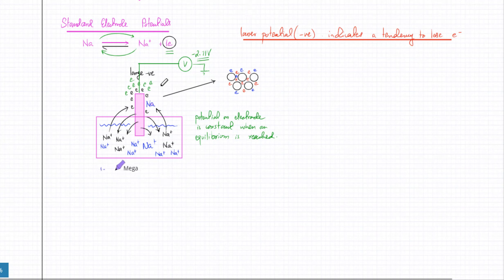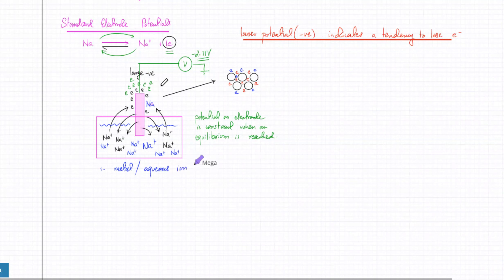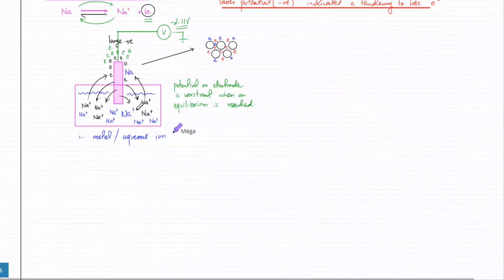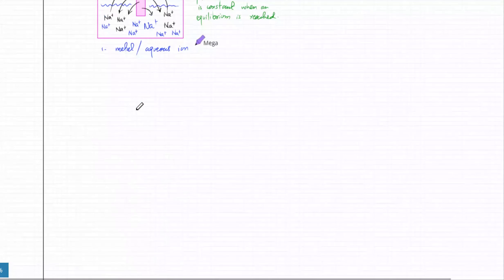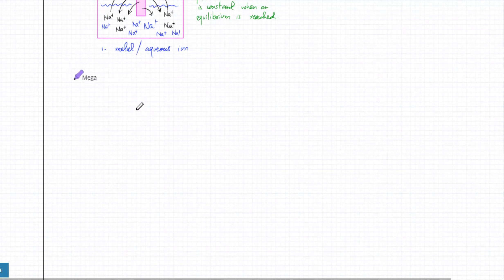A metal aqueous ion electrode basically means that whenever you have a metal and you're trying to figure out whether it wants to form ions, or you have ions turning into metals, and you want to figure out the electrode potential — you make an electrode where the ions are in the solution and the electrode itself is made of metal. One example: what happens if you have copper — but let's talk about the other types of electrodes.